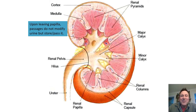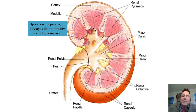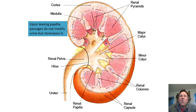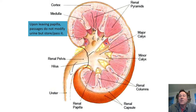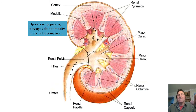This should all be familiar — the calyces, the pyramids, the papilla, the cortex, the columns, the ureter leaving. Once urine is formed, it drips out of the calyces. As it comes down the collecting ducts, if ADH is present you can reabsorb water; if not, the pee comes out really watery. But once it makes its way into the calyces, the renal pelvis, and the ureter, you don't change it — that's your urine.